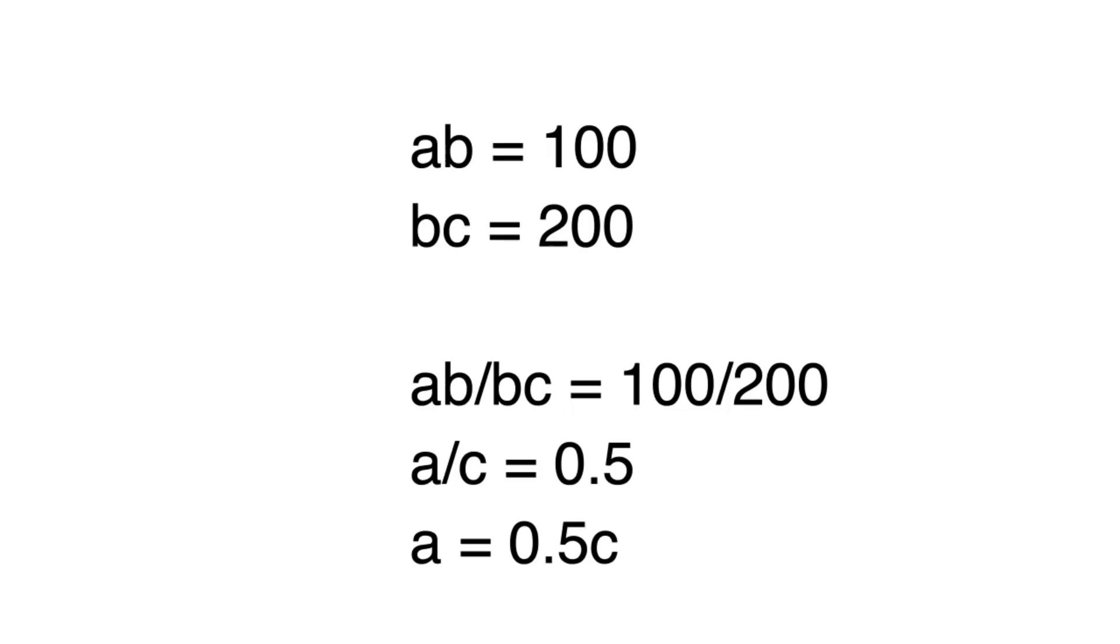100 over 200 is just 0.5. We'll multiply C on both sides to get A equals 0.5C. So now we can just do substitution. It's just like a system of equations.